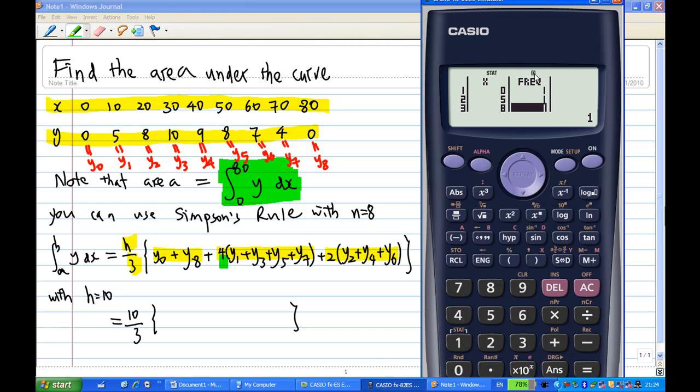So I'm going to come here and add 4. And Y2, I'm going to add 2 times. Then Y3, I'm going to add 4 times. Y4, which is 9, I'm going to add 2 times. Y5, which is odd, I'm going to add 4 times. Y6, which is even, I'm going to add 2 times. Y7 is an odd position Y, I'm going to add 4 times. And the last value of Y is Y8, which is only 1 time.